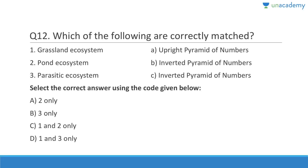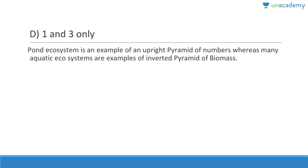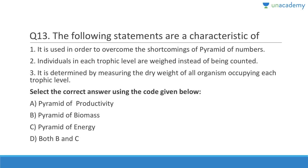Question 12: Grassland ecosystem has an upright pyramid of numbers — correct. Pond ecosystem has an inverted pyramid of numbers — wrong; rather it is a parasitic ecosystem that has an inverted pyramid of numbers. Answer is D, 1 and 3 only. Pond ecosystem is an example of an upright pyramid of numbers, whereas many aquatic ecosystems are examples of inverted pyramid of biomass.